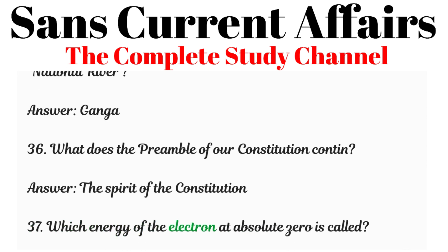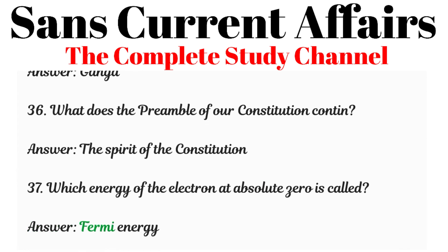Question 37: The energy of the electron at absolute zero is called which thing? Answer: Fermi energy.